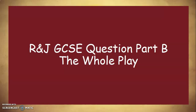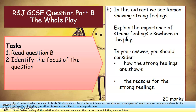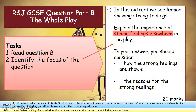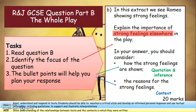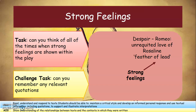Now we're going to look at Part B, which focuses on the whole play. Read Question B and identify the focus of the question. Hopefully you've realized it's all about strong feelings. I've also highlighted 'elsewhere' because you must use the rest of the play, not the extract. The bullet points will help you plan: the first requires a quotation and inference, the second is about context. Think of all the times strong feelings are shown in the play — I've given you an example. Challenge task: can you remember any relevant quotations? Pause to complete this task.